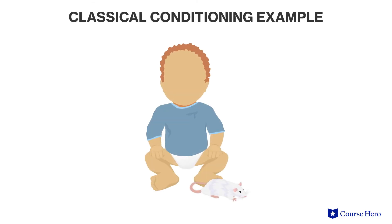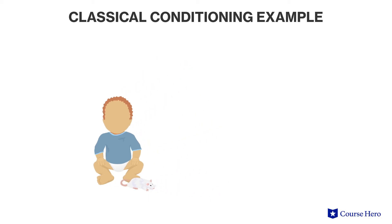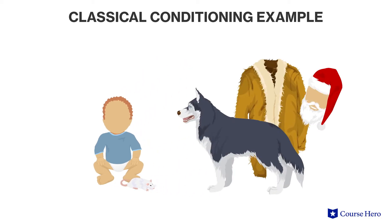They did this by striking a hammer against a steel bar whenever the rat was presented to the infant. Prior to this pairing, Albert liked playing with the rat. After the pairing, Albert cried and attempted to crawl away whenever the rat was presented. Albert's fear also generalized to other similar stimuli, including the family dog, a fur coat, and a Santa Claus mask.